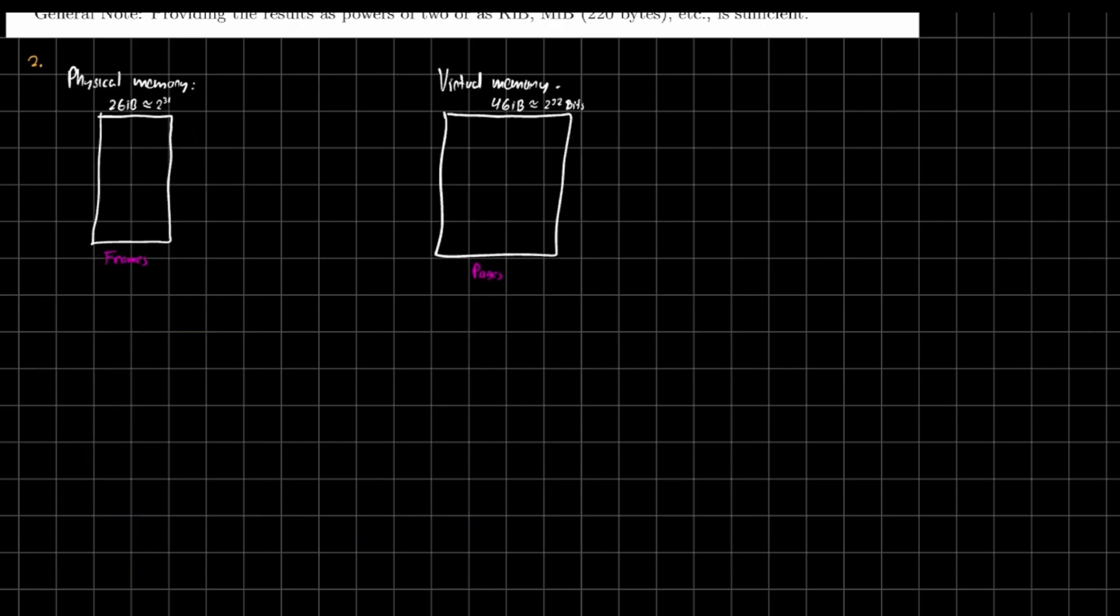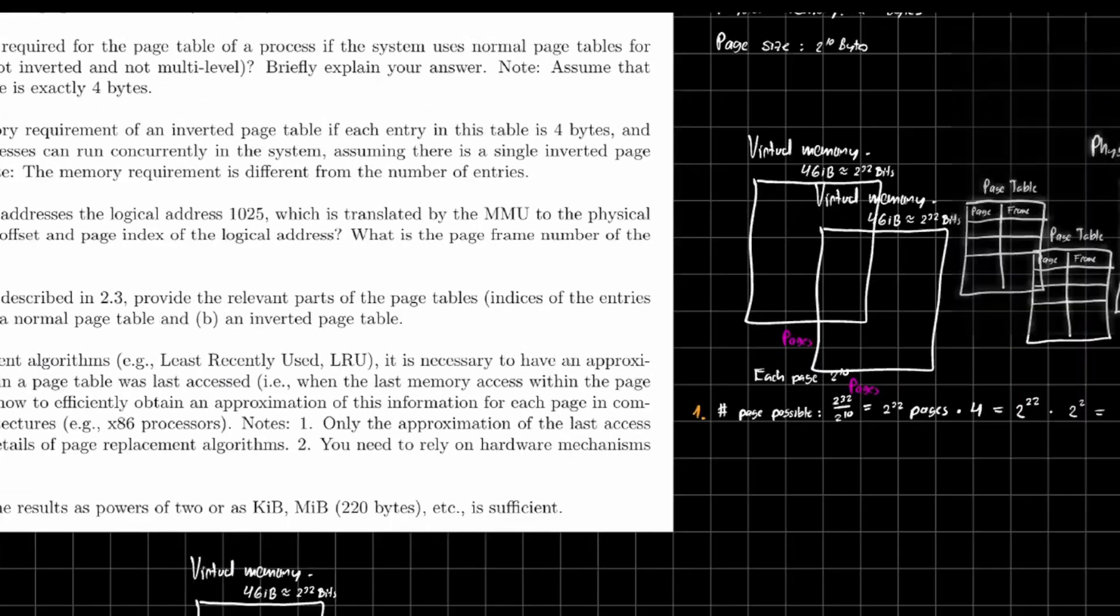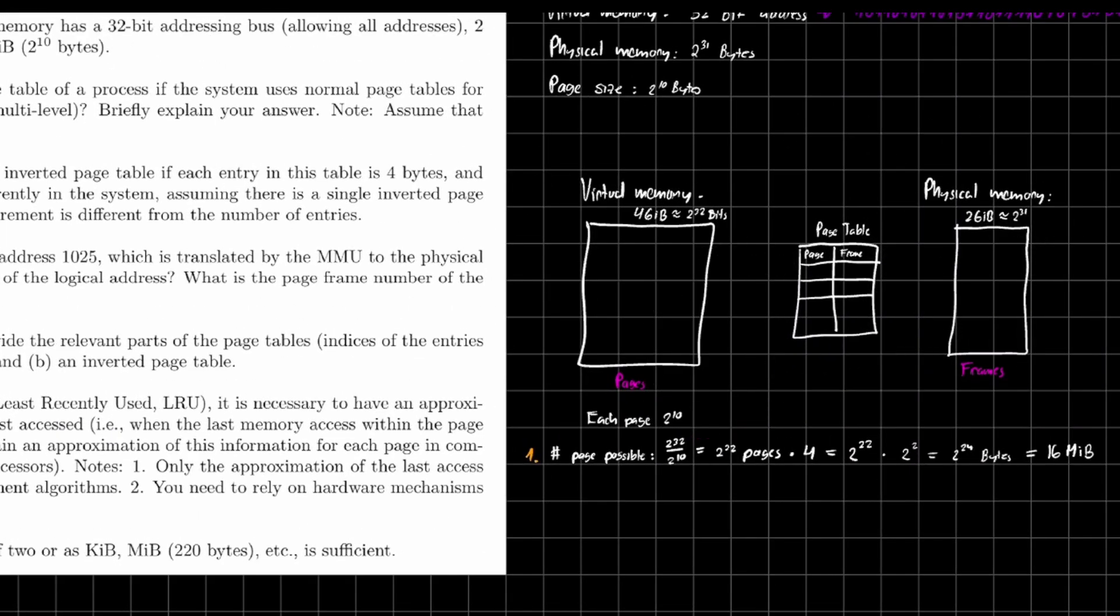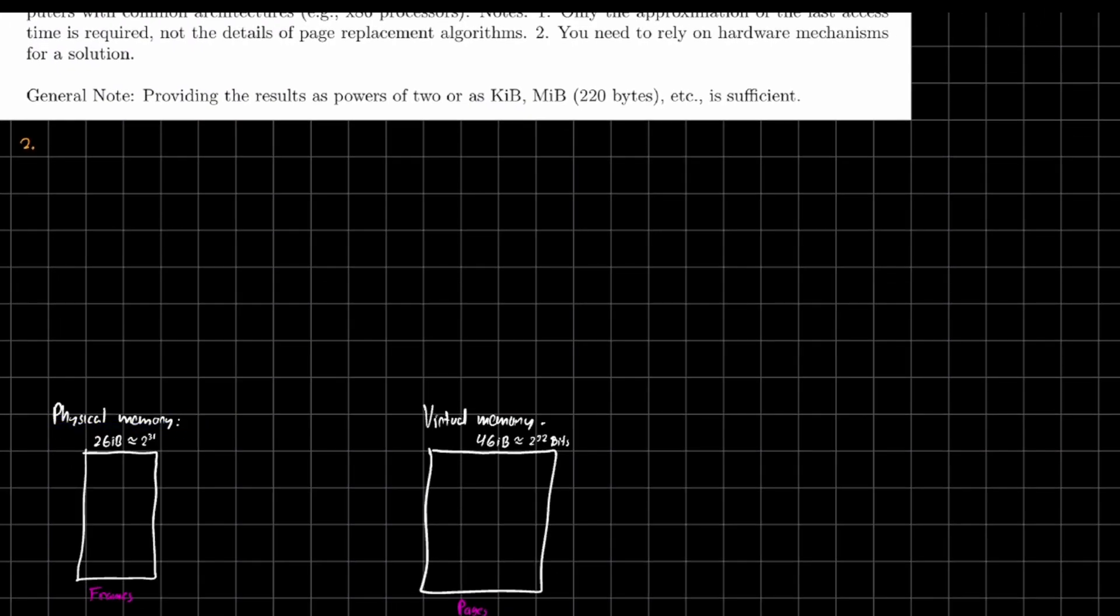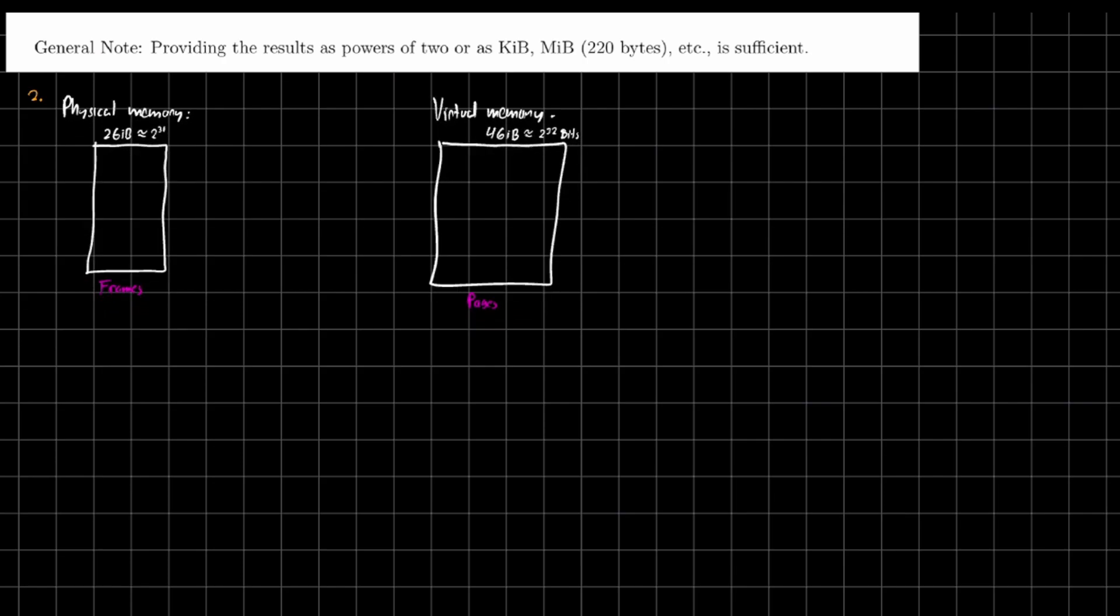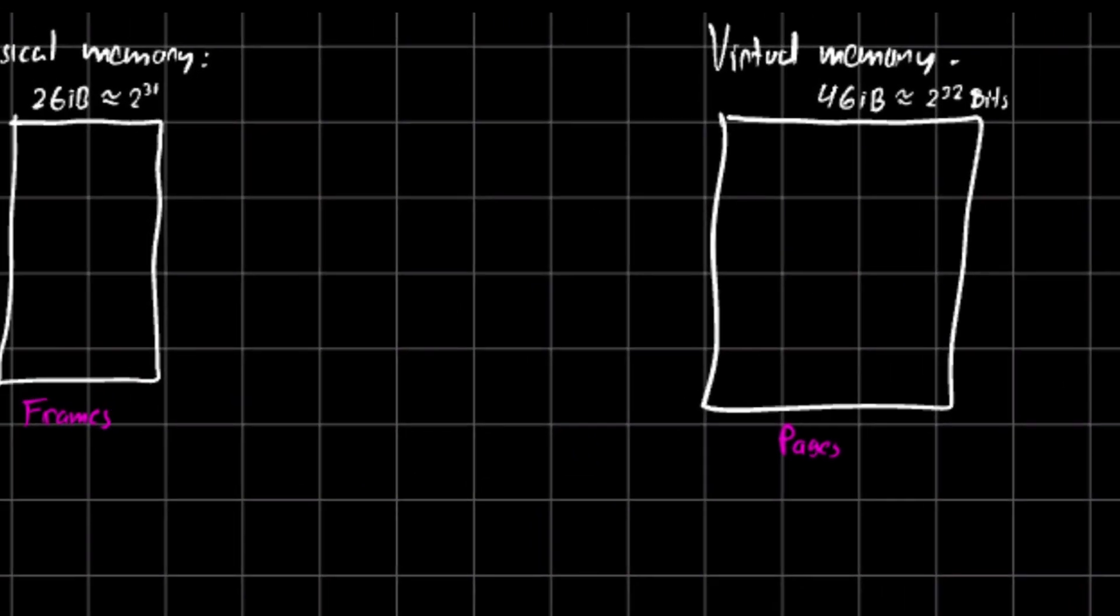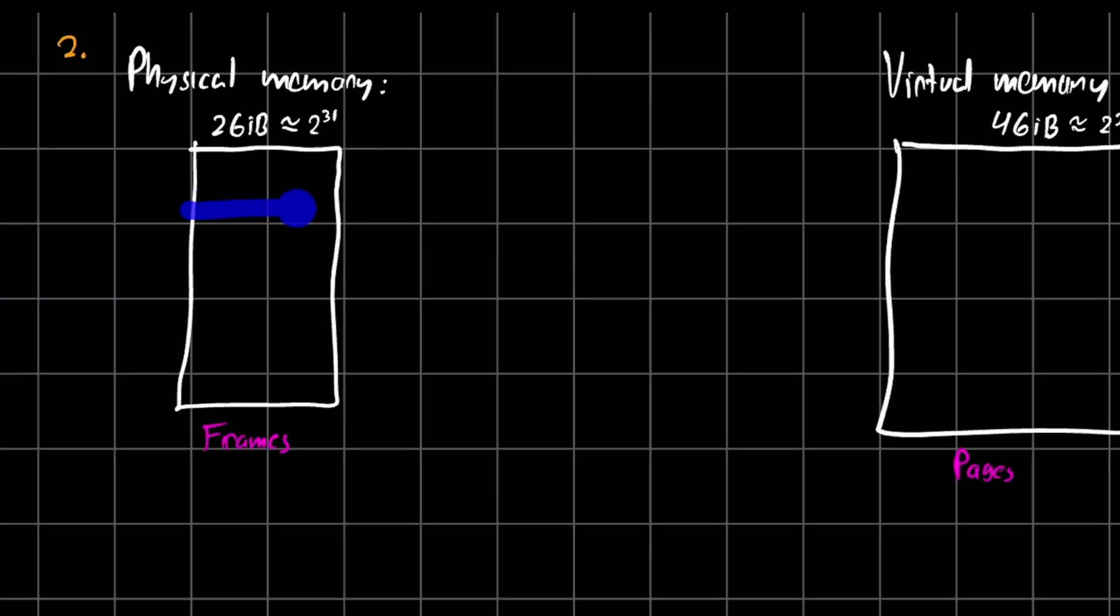As you can see in this side, we have it inverted. Instead of having the virtual memory on the left, we have the physical memory on the left. And what we do here is we do an inverted page table. So the inverted page table, what it does is it tells us which frame is assigned to which page rather than which page is assigned to each frame.